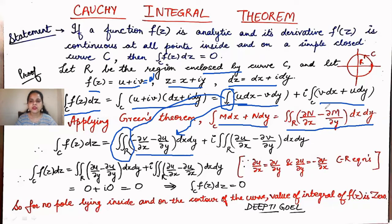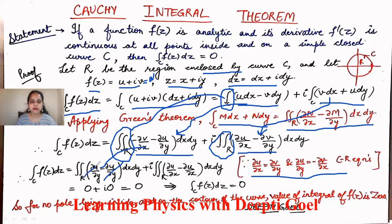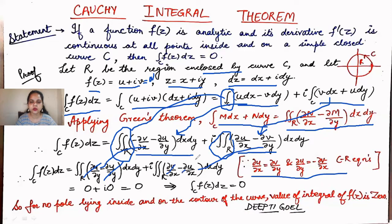Similarly for the second integral, applying Green's theorem gives the term (∂u/∂x − ∂v/∂y)·dx·dy, changing the line integral to a surface integral. Since the function is analytic, the Cauchy-Riemann equations hold: ∂u/∂x = ∂v/∂y and ∂u/∂y = −∂v/∂x. Substituting these, ∂u/∂y and −∂v/∂x cancel each other, and ∂u/∂x and ∂v/∂y cancel each other, so the integral f(z)dz equals zero.